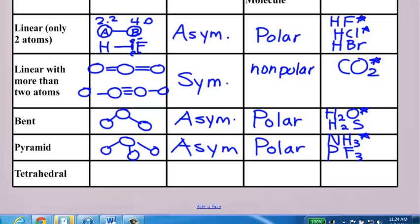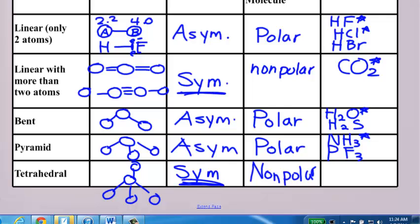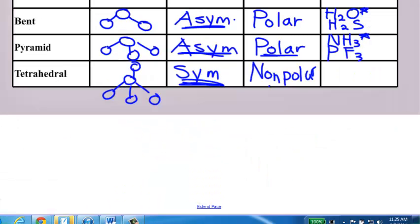And then finally, tetrahedral, central atom four bonds. Looks like that. That is symmetrical. Symmetrical shapes mean the overall charges cancel out. And so that is a nonpolar molecule. Notice, any molecule that is symmetrical is nonpolar. Any molecule that is asymmetrical is polar. So, symmetry always goes with no poles. Asymmetry always goes with poles. North and south pole. Plus and minus pole.